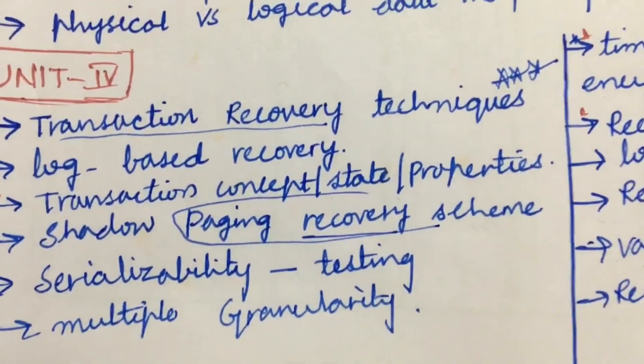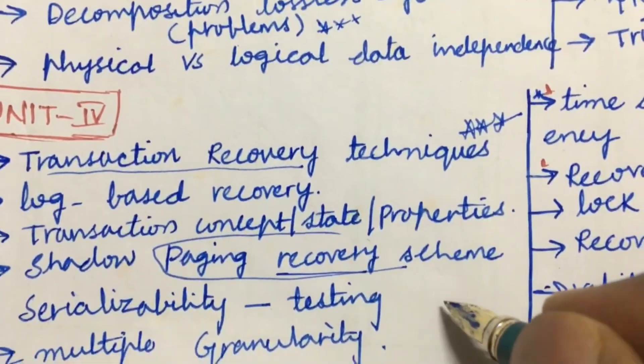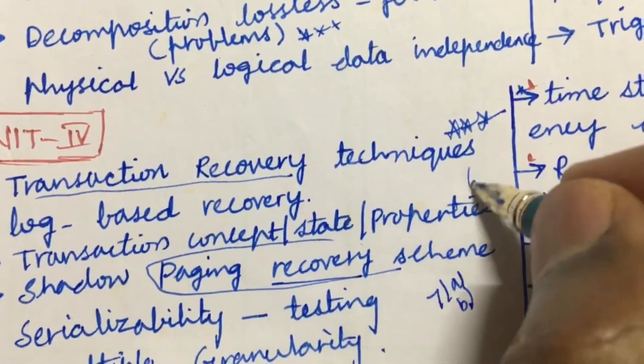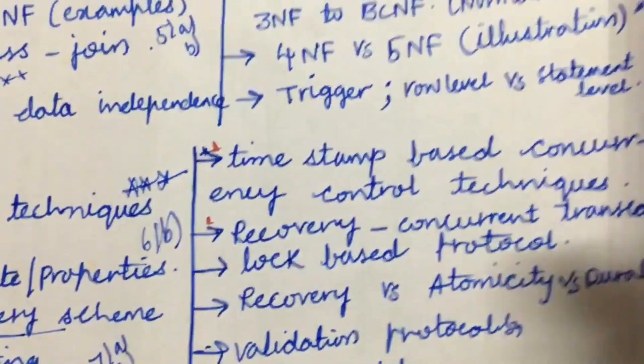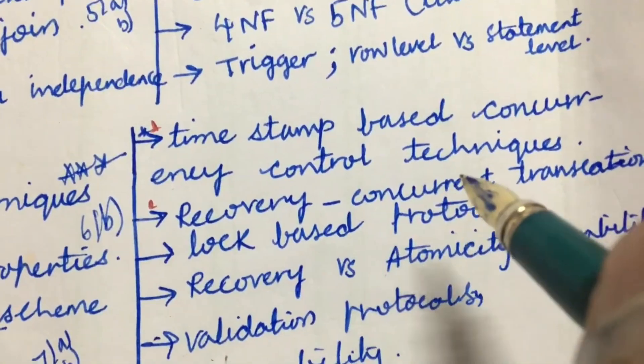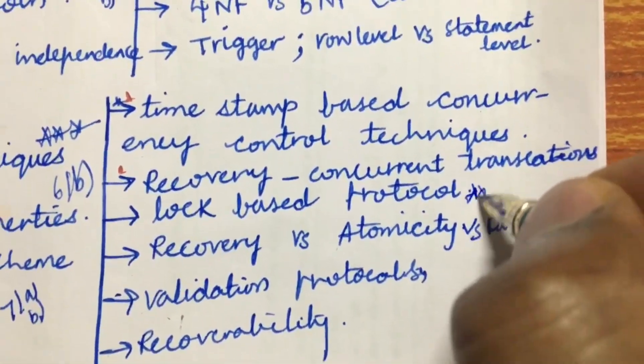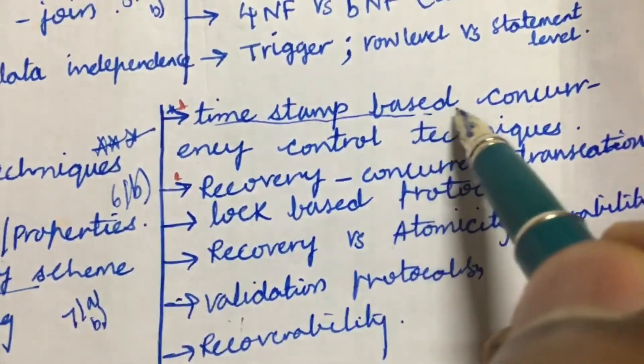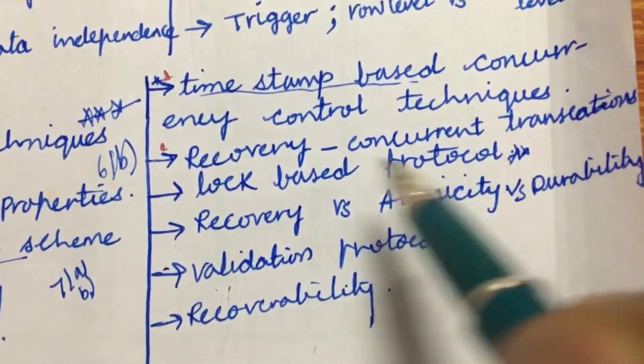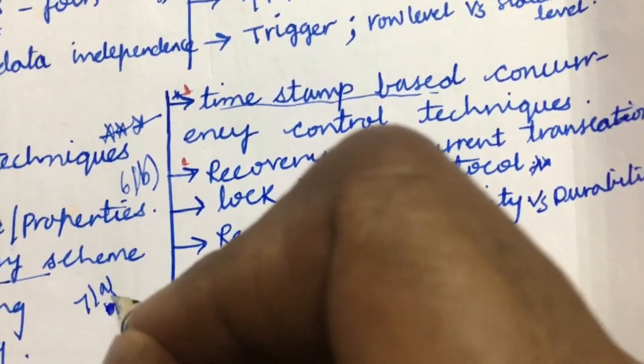Serializability and testing and the multi-granularity, this may be 7A as well as 7B, or sometimes this may be 6B also, maybe covering from this part. Later, timestamp-based concurrency control techniques as well as recovery concurrent transaction and log-based protocol, maybe deadlock, but timestamp-based is very important. Recovery concurrent transaction is repeatedly asked and the difference of this and validation protocols, recoverability.